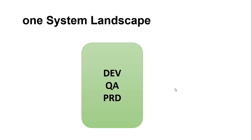In the one-system landscape, all development, testing, and production operations run in parallel. The main advantage is reduction in hardware and support costs. However, it involves serious problems and risks — for example, whenever an SAP Note, which are critical objects, needs to be applied, it can directly impact your standard objects and be applied directly in the production system, which is very risky. Because of this, SAP does not recommend the one-system landscape.